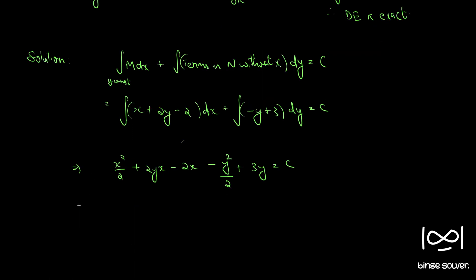Multiplying throughout by 2 we get x square plus 4yx plus 4y